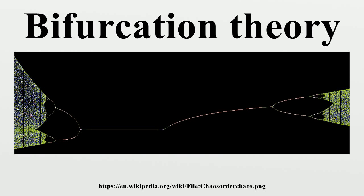Bifurcation theory is the mathematical study of changes in the qualitative or topological structure of a given family, such as the integral curves of a family of vector fields and the solutions of a family of differential equations, most commonly applied to the mathematical study of dynamical systems. A bifurcation occurs when a small smooth change made to the parameter values of a system causes a sudden, qualitative or topological change in its behavior. Bifurcations occur in both continuous systems and discrete systems.